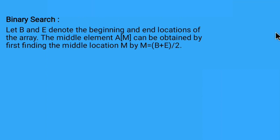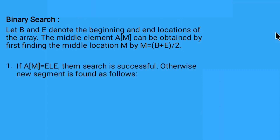So what are the criteria that we need to follow? The first criteria is: if a of m, that is array of mid, is equal to the element, then the search is successful. Otherwise a new segment is found as follows.